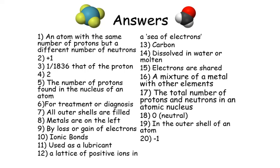Number seventeen: the total number of protons and neutrons in an atomic nucleus. Number eighteen: zero, or neutral. Number nineteen: in the outer shell of an atom. And number twenty: minus one. How well did you do? Okay, bye for now.